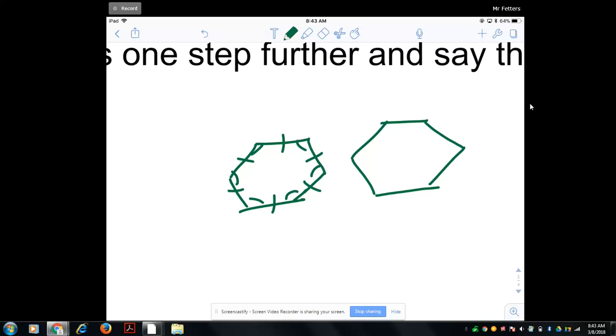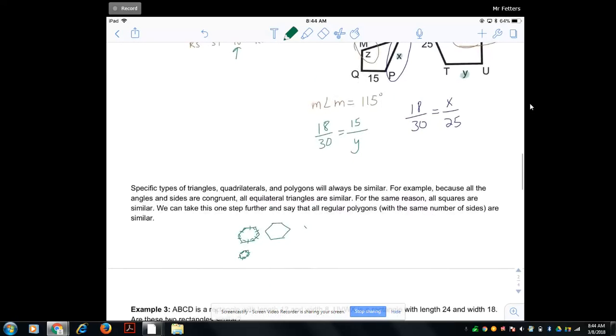So in that regard, I could do another little hexagon down here that's regular. For them to be similar, you have to have the same number of sides, which we do. You have to have all angles being congruent, which they are because they're regular. And then all the sides have to be in proportions, and they are because it's just a scale factor between the two. So any regular polygon is always in proportion.